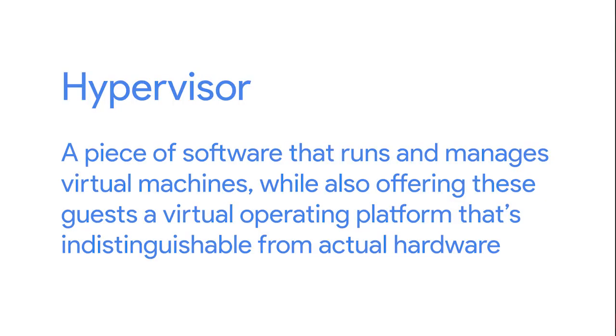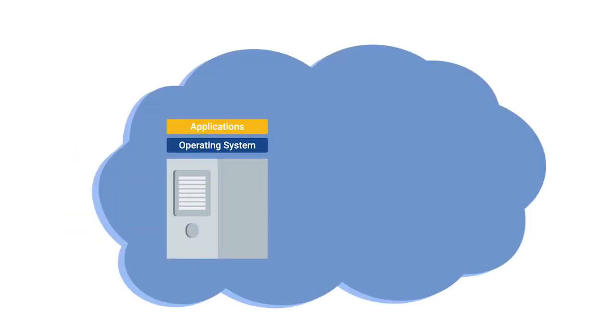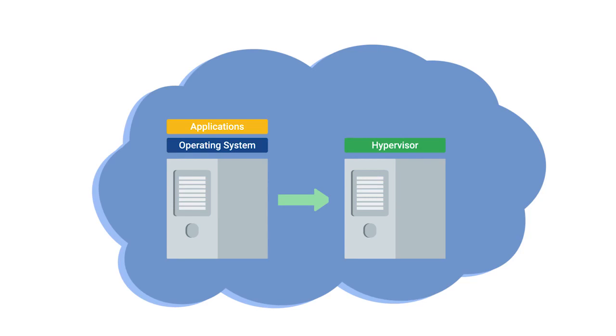An operating system expects to be able to communicate with the underlying hardware in certain ways. Hardware virtualization platforms employ what's called a hypervisor — a piece of software that runs and manages virtual machines, while also offering these guests a virtual operating platform that's indistinguishable from actual hardware. With virtualization, a single physical computer can act as the host for many independent virtual instances, each running their own independent operating system.